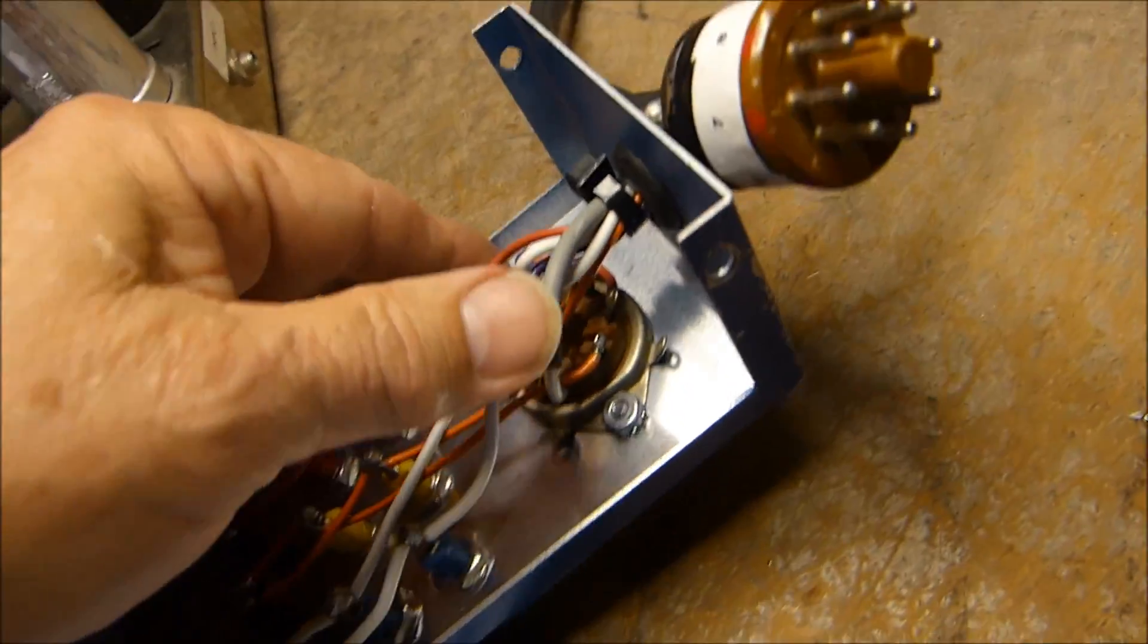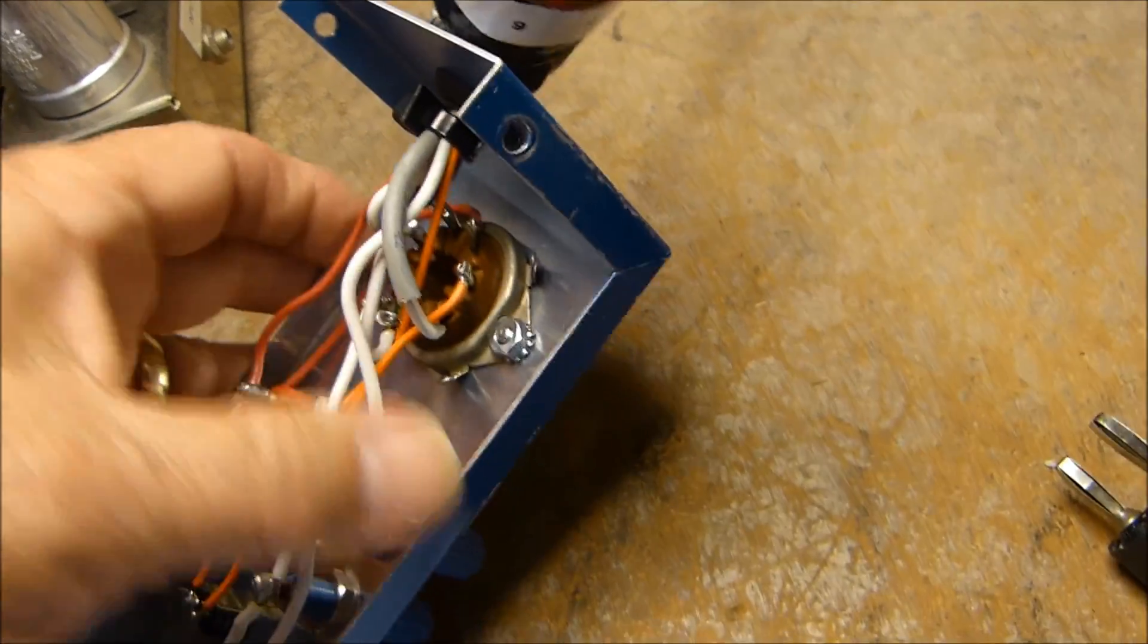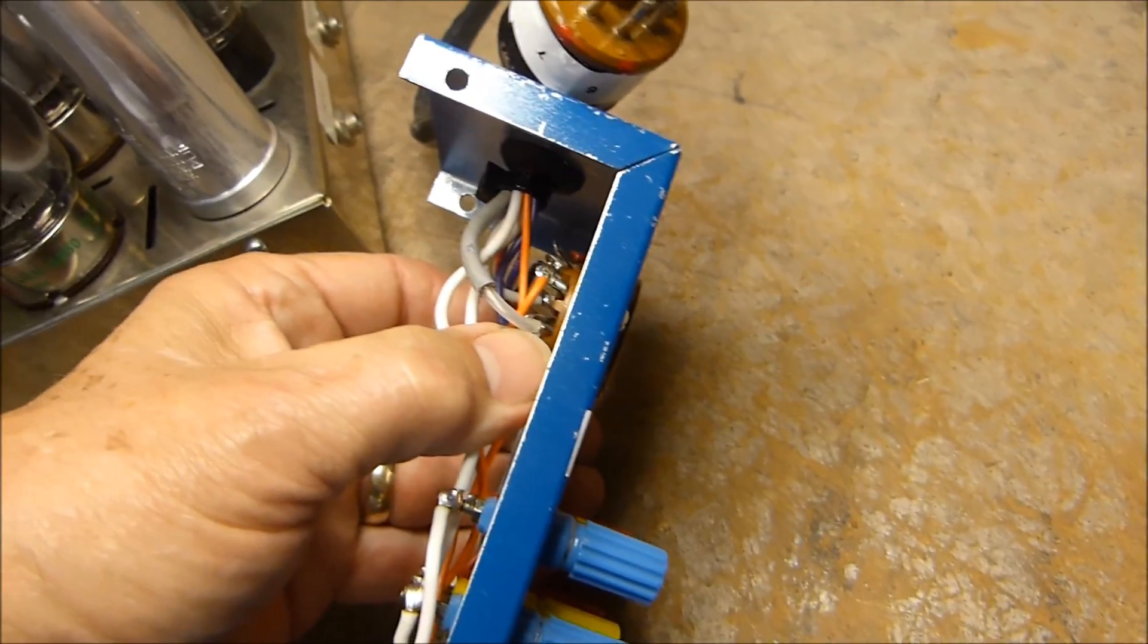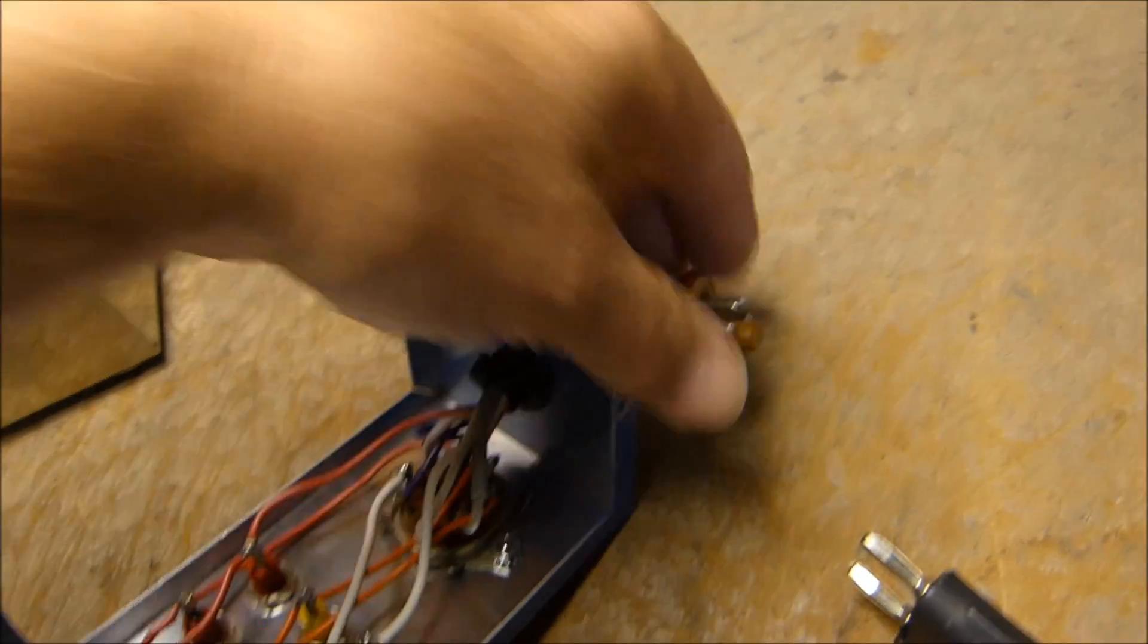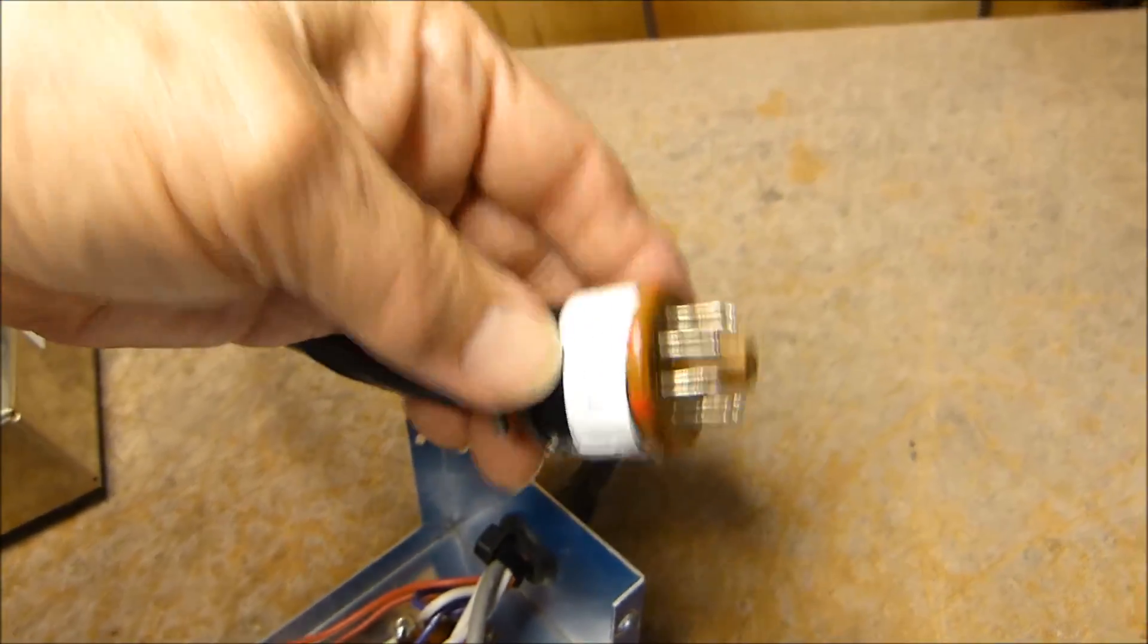Pin 5 right here is the control grid. I did shield it just to keep it from hopefully going into any kind of howling and oscillation. Over here the shield is connected to pin 8, which is the cathode.